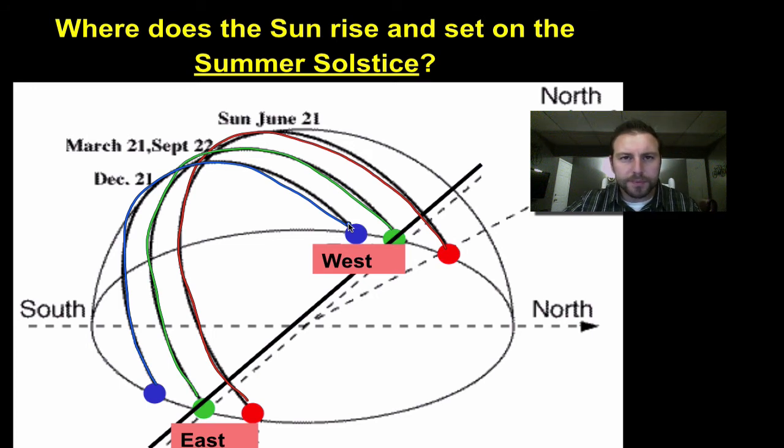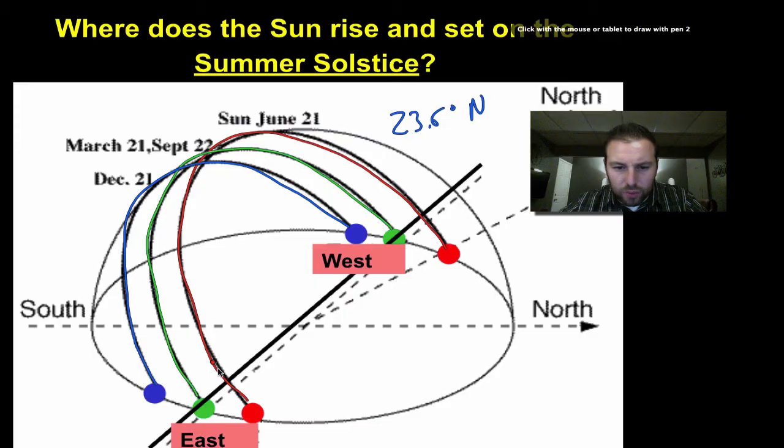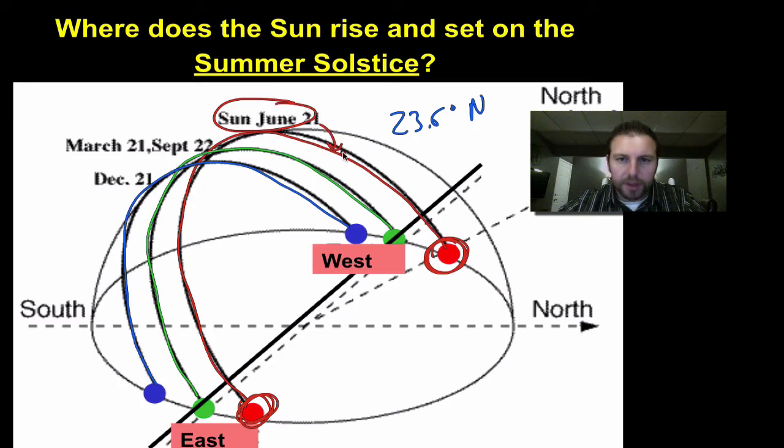Now remember the sun is in the northern hemisphere at this point in the year, it's at 23.5 degrees north. That's where the sun's rays are directly hitting. Therefore, the sun is going to rise north of east and set north of west. Right here. So this one, summer June 21st, the red line, will be our summer solstice path.